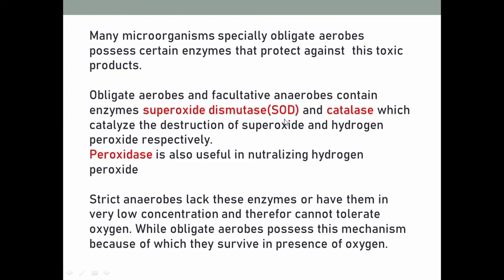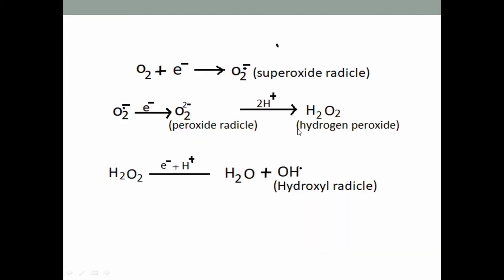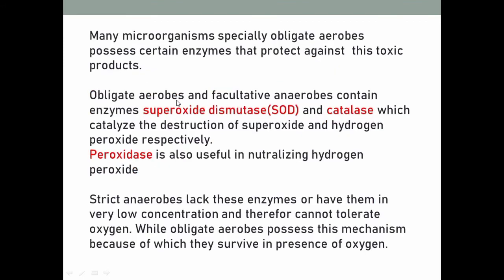Superoxide dismutase and catalase catalyze the destruction of superoxide and hydrogen peroxide radicals respectively. Peroxidase is also useful in neutralizing hydrogen peroxide, so for hydrogen peroxide there are two enzymes: catalase and peroxidase. When we isolate any bacteria, we carry out the catalase test to determine whether the isolated bacteria produces the catalase enzyme or not, and on that basis we determine whether the isolated organism is aerobic or anaerobic.